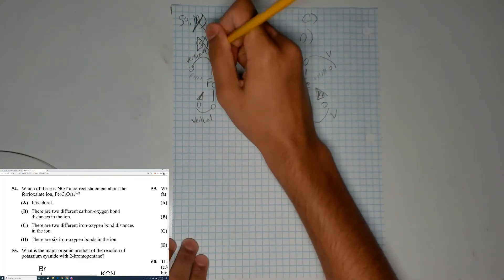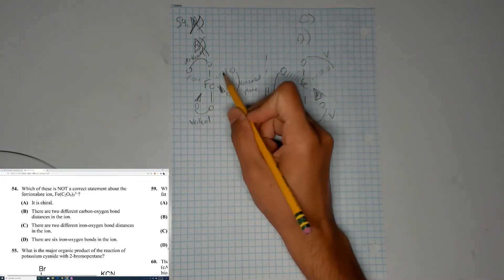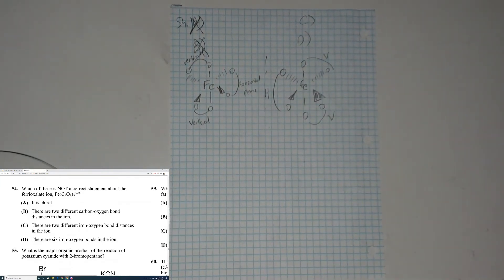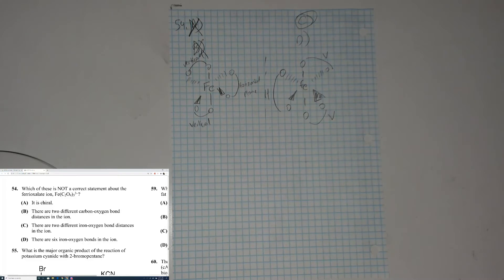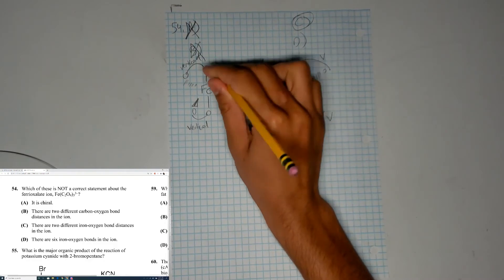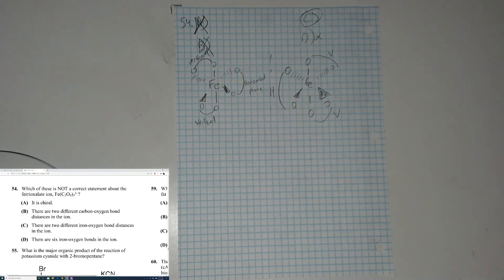For statement C — two different iron-oxygen bond distances — no, they're all the same. There's no reason for them to be different. Statement D: there are six iron-oxygen bonds — one, two, three, four, five, six — that's correct. So the answer to question 54 is C, because there's no reason for the bond lengths to differ since all ligands are the same oxalate ligand.